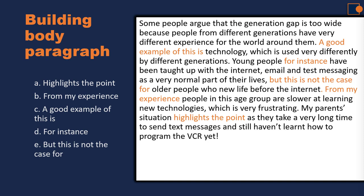So 'for instance' is used when you want to give an example — young people, for instance, are taught to use the internet, email, and text messaging as a very normal part of their lives. Then there is a concession part. When you want to give an opposite idea or concession, use linking words such as 'but,' 'although,' 'nevertheless,' or 'despite this.' For example: 'But this is not the case for older people who knew life before the internet.'